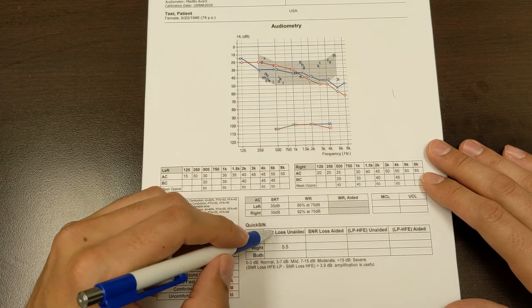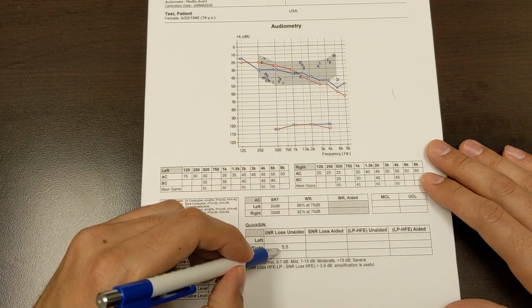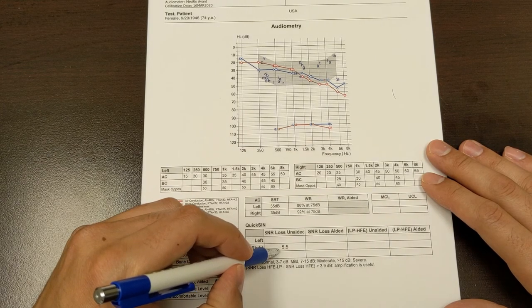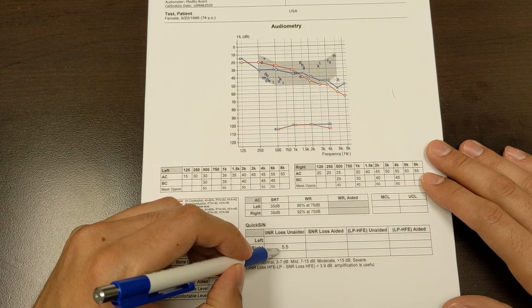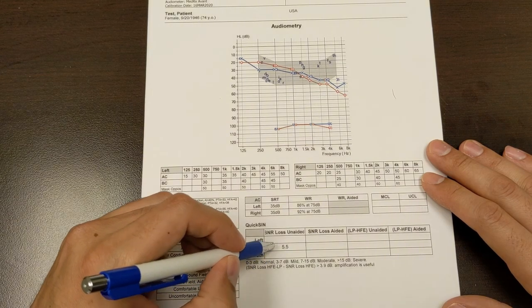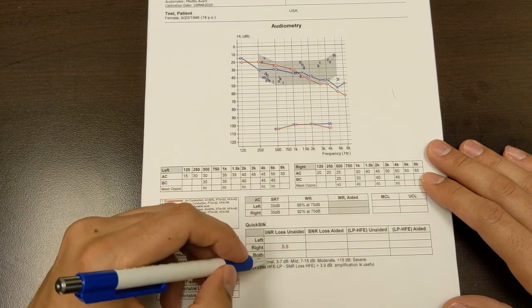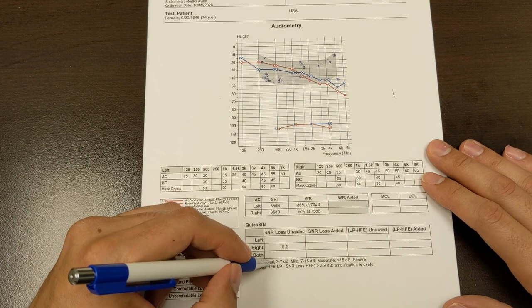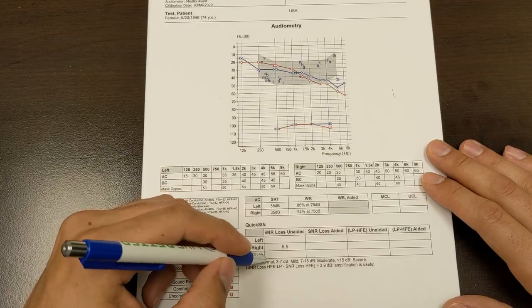And that tells us how much louder the signal had to be above the noise for you to make out the signal. And so 5.5 means that the signal had to be 5.5 decibels louder than the noise in order for you to make out the signal.